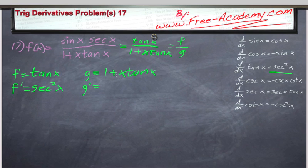And then g is going to be equal to 1 plus x times the tangent of x. G prime, derivative of 1 is 0, so it's the derivative of x tangent of x. This is going to be our product rule. So derivative of x is 1 times tangent of x plus x times the derivative of tangent of x, which is secant squared of x.